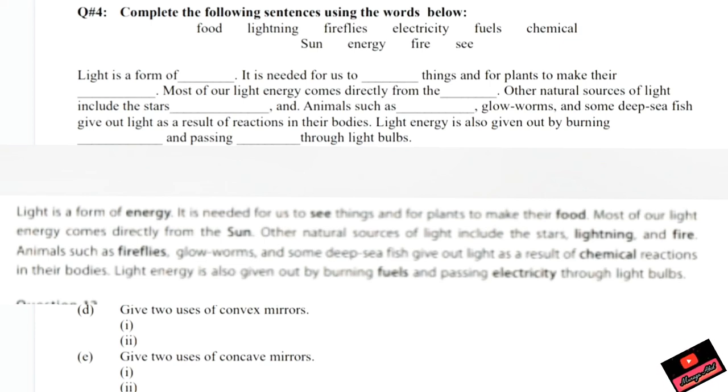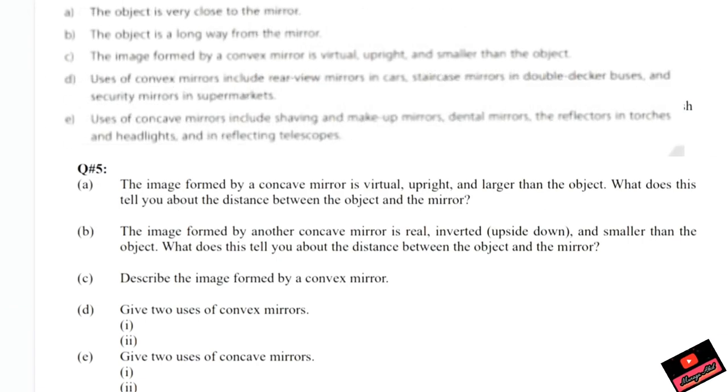Question number four is: we have to fill up. I have solved it here for you. Light is a form of energy. It is needed for us to see things and for plants to make their food. Most of our light energy comes directly from sun. Other natural sources of energy are stars, lightning, and fire. Animals such as firefly and glowworms also give off light as a result of chemical reactions that are occurring in the body. Light energy is due to burning of fuels in electricity appliances.